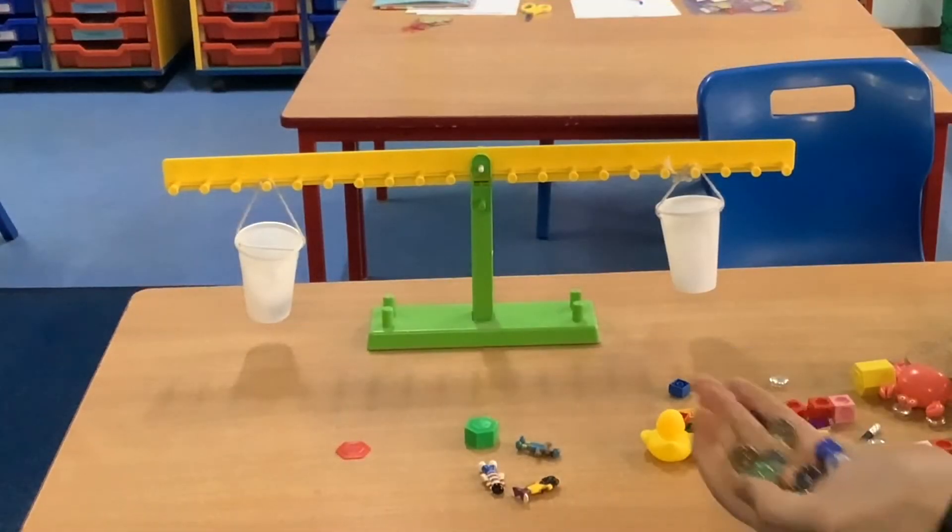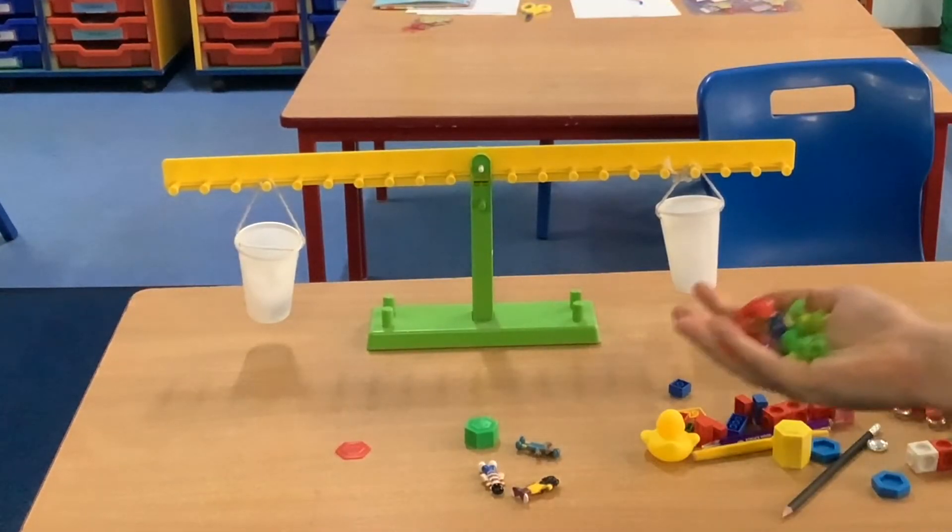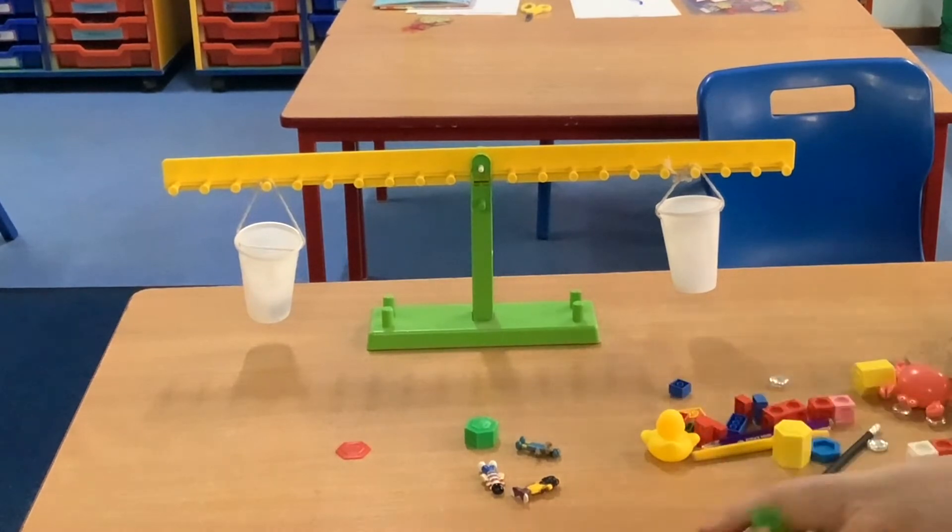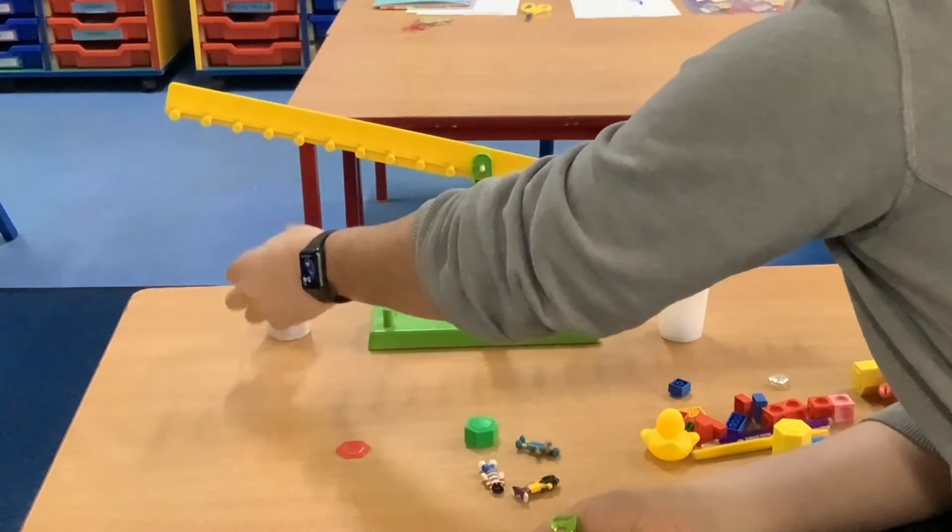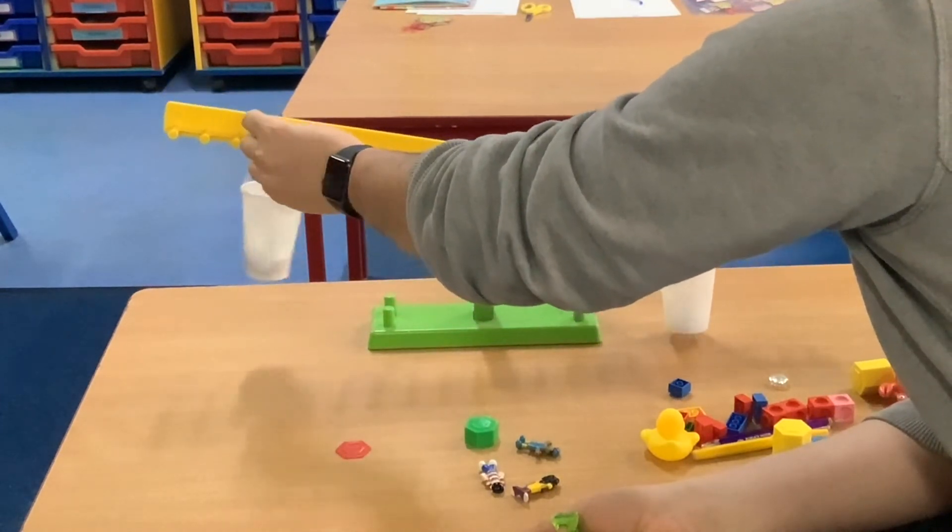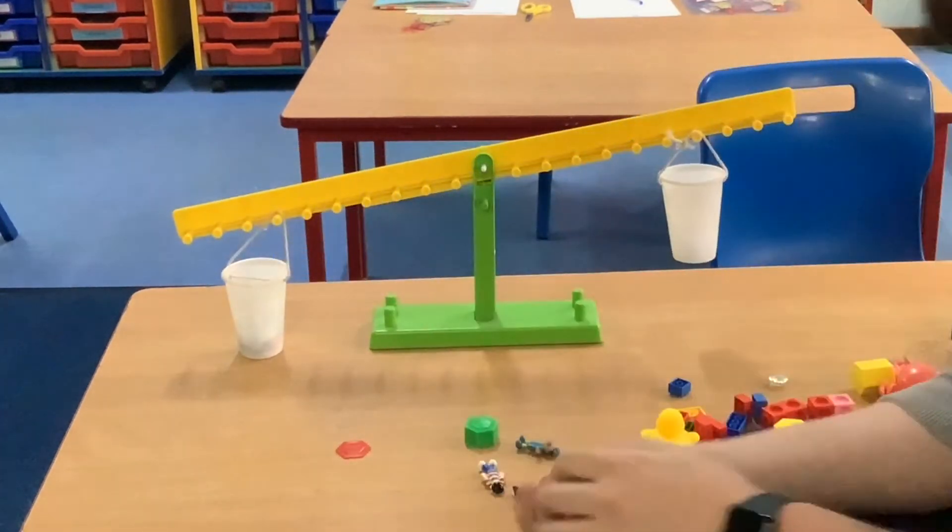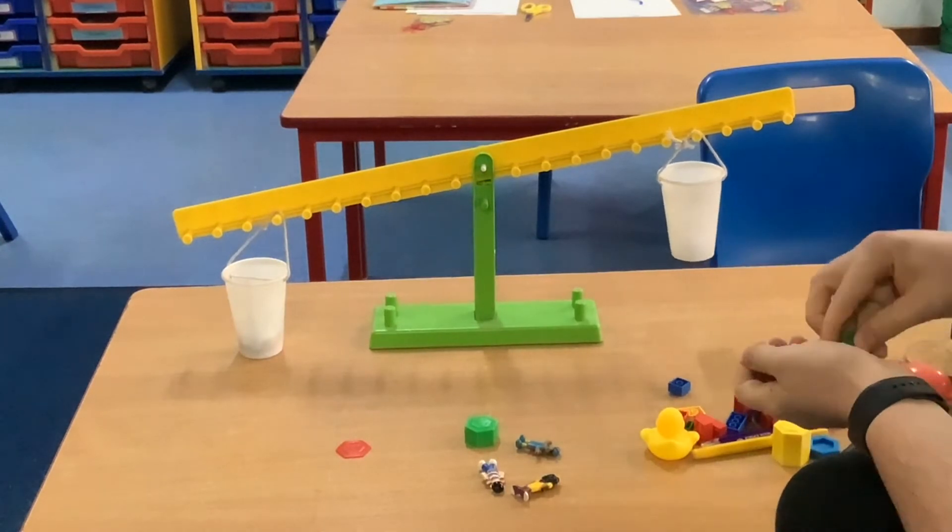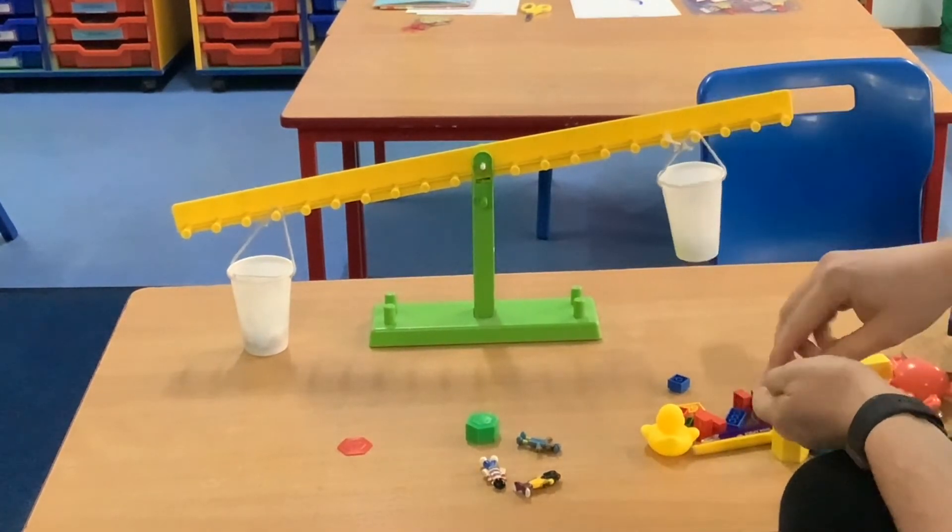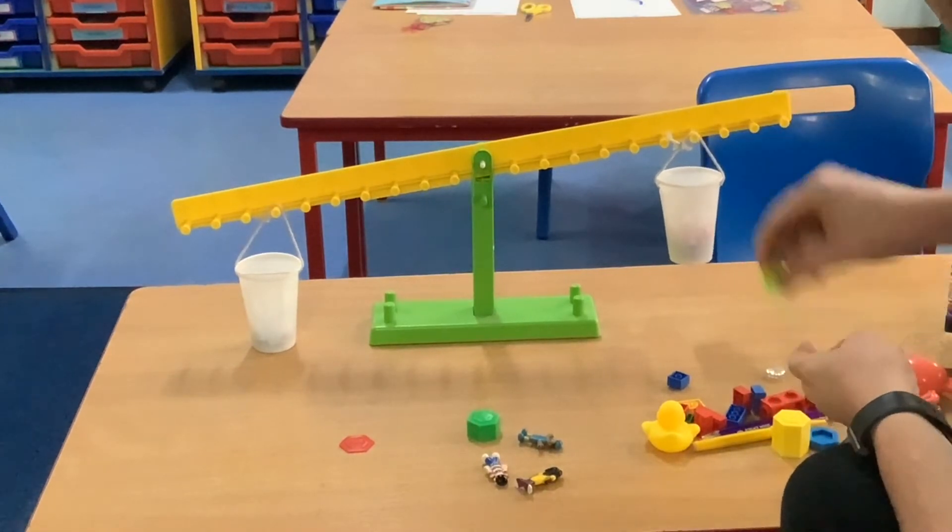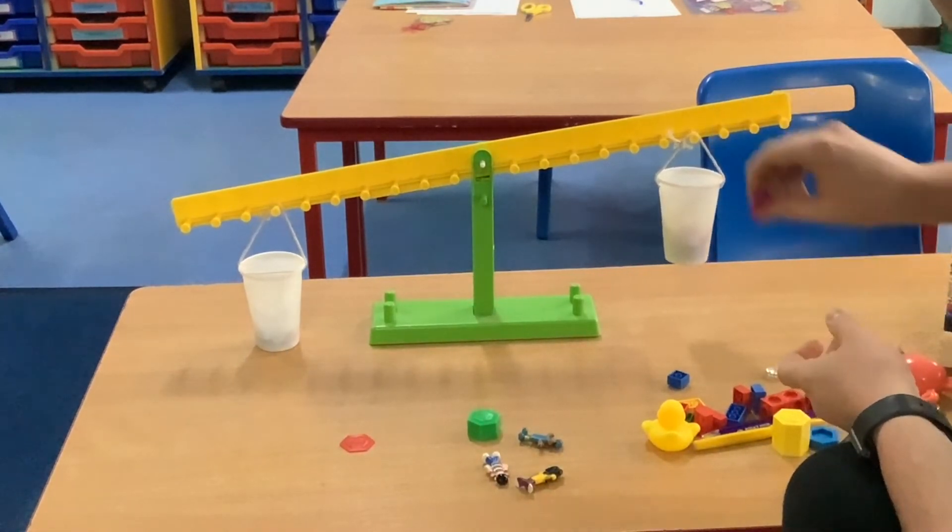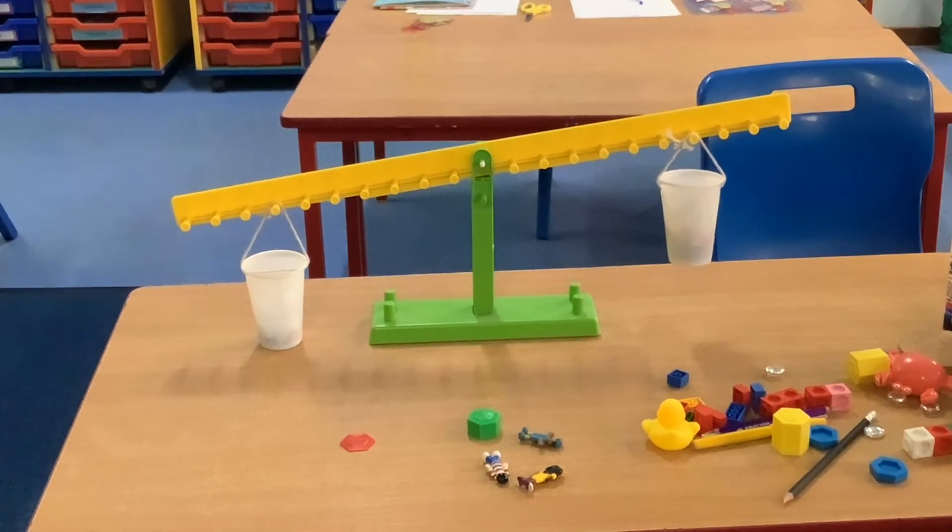What's going to weigh more? Ten marbles or eight alien toys? So marbles are going to go on this side. Oh, the cup's come off the weight. So at the moment that's definitely heavier. Let's put these aliens in. One, two, three, four, five, six, seven, eight. So the marbles are definitely heavier.